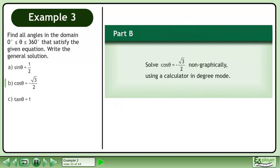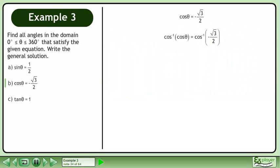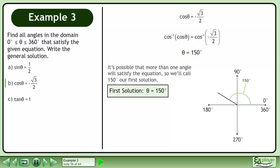In part b, solve cos θ equals negative root 3 over 2 non-graphically using a calculator in degree mode. Take the inverse cosine of each side. The result is θ equals 150 degrees. It's possible that more than one angle will satisfy the equation, so we'll call 150 degrees our first solution.